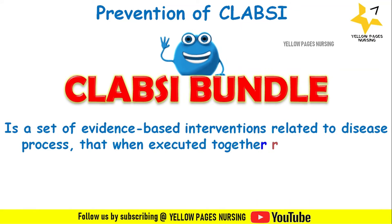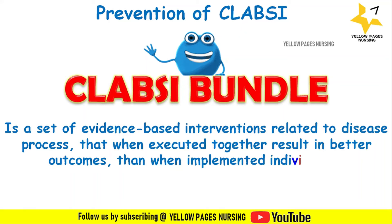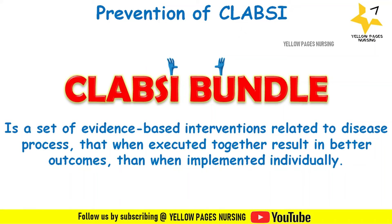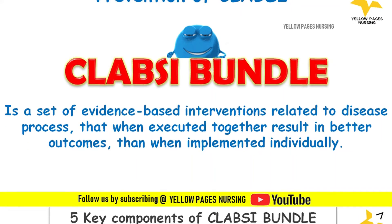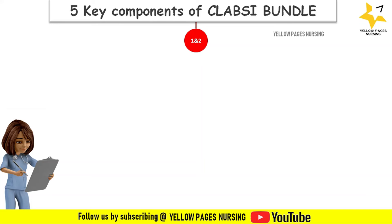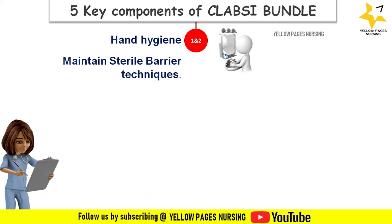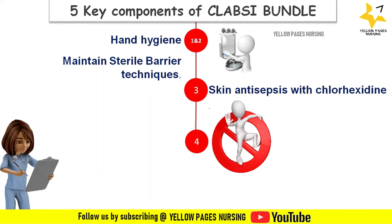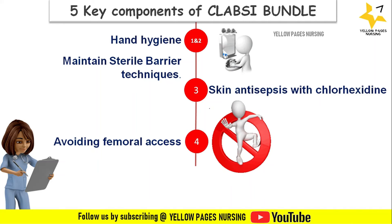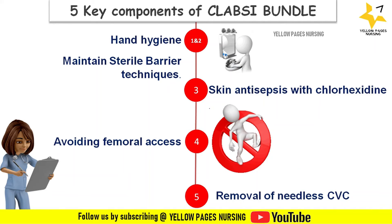A CLABSI bundle is a set of evidence-based interventions that, when executed together, results in better outcomes than when implemented individually. Prevention involves an insertion bundle and a maintenance bundle. Key components include hand hygiene, maintaining sterile barrier techniques, skin antisepsis with chlorhexidine, avoiding femoral access, and removal of unnecessary central venous catheters.